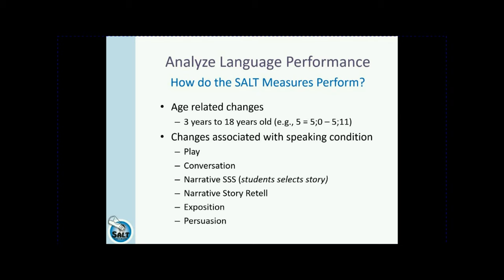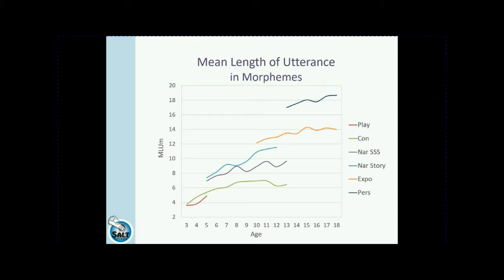Cheyanne — you probably picked up on a few things about her difficulty with expressive language. Before we delve into her case study, let's think about how do SALT measures perform: are there age-related changes, or what about the speaking condition? Obviously there are age-related changes across the span of language development from three-year-olds to 18-year-olds. Are there changes associated with the speaking condition? What can we expect for language measures based on a play or conversation compared to persuasion? We have graphs here where the colored lines represent the speaking conditions — red is play at the bottom, persuasion at the top.